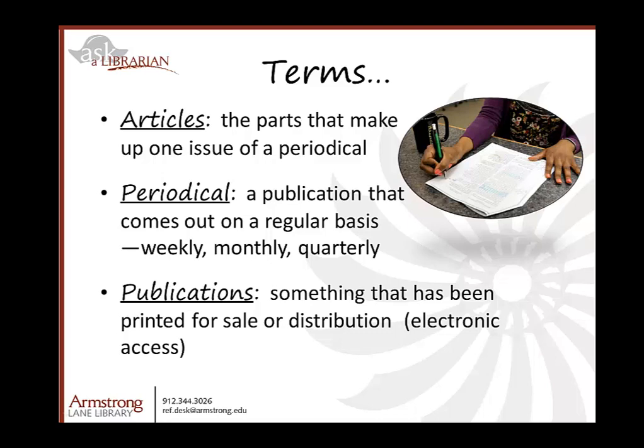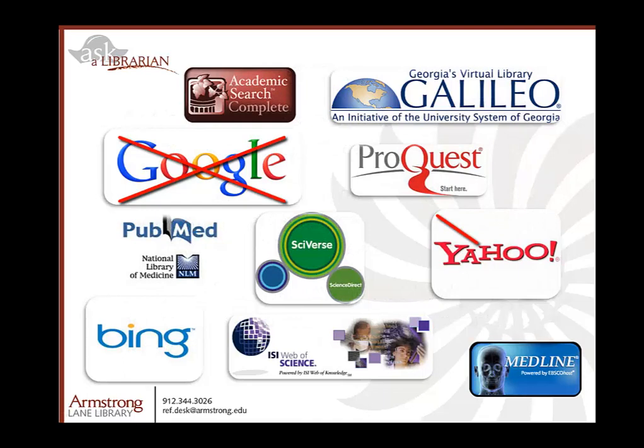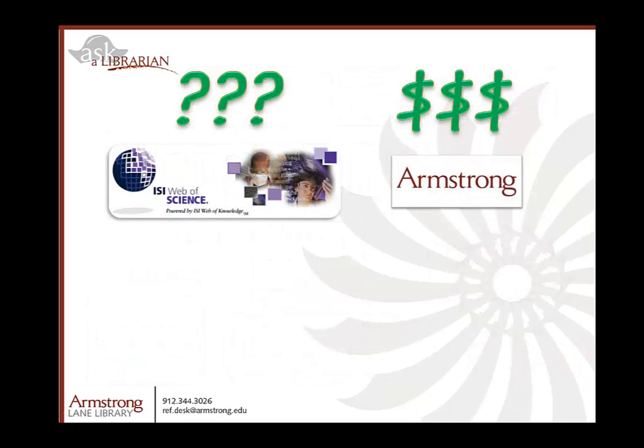All these articles and their corresponding publications are organized in databases. Databases are not search engines. Instead, they are collections of articles that have been described by humans, and they have lots of value-added features — like how to cite the article, links to the full text, and ways of tagging articles to make them more findable. Also, databases cost money.